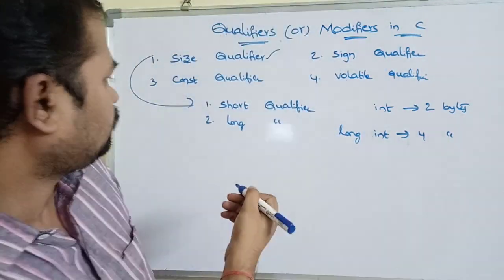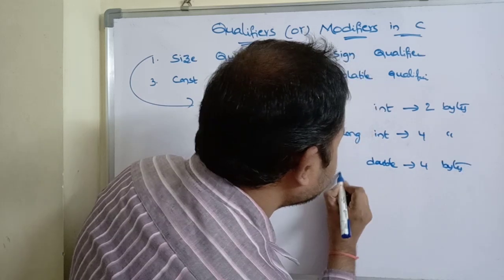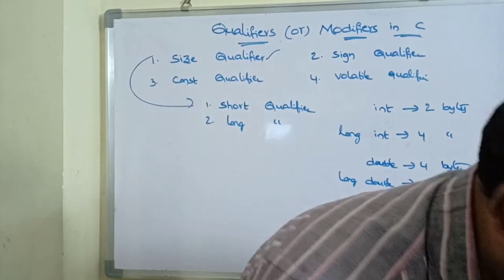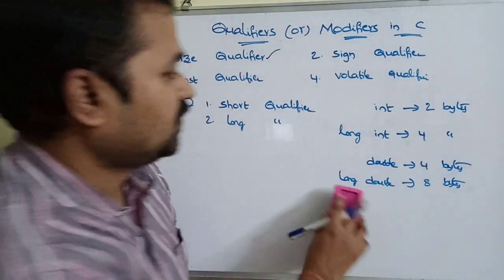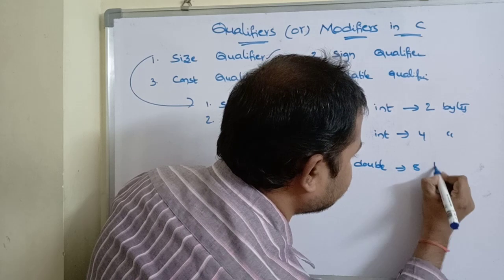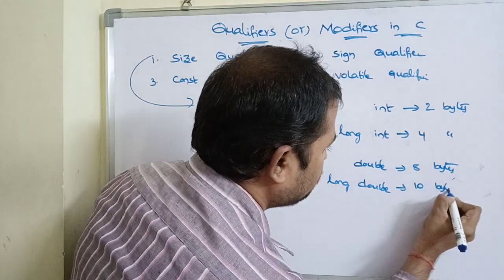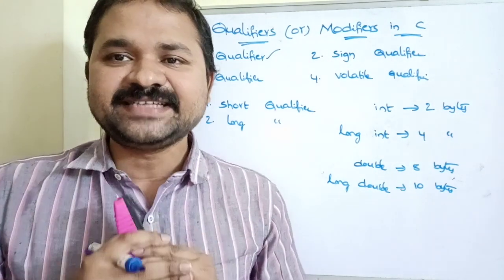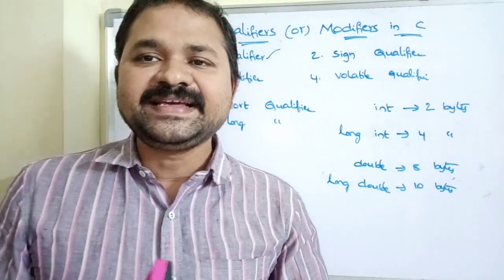Similarly, if the size of a double is four bytes, then the size of a long double will become eight or ten bytes depending on the system. So the long qualifier increases the size of the double, and we can say that the long qualifier increases the size of the basic data type, whereas the short qualifier keeps the size the same or decreases it.